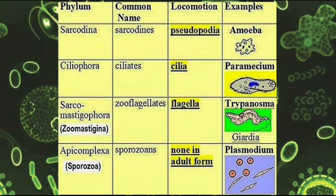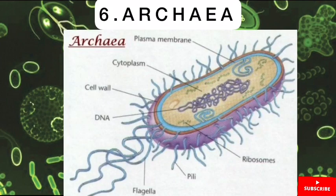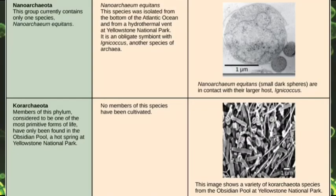The Apicomplexa, with an example being the Plasmodium. Protozoans are single-cell microscopic animals such as Trypanosoma, Amoeba, Paramecium, and Euglena. The last microorganisms we'll be taking a look at are the Archaea. They are classified into the following phyla: the Euryarchaeota, the Crenarchaeota, the Nanoarchaeota, and the Korarchaeota.